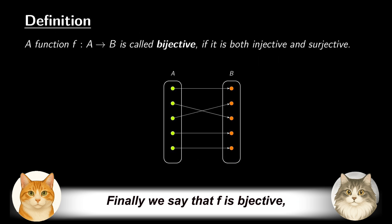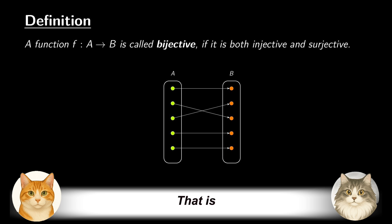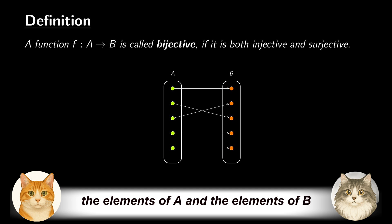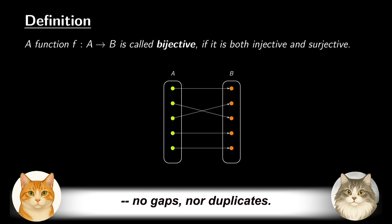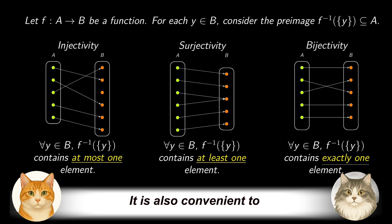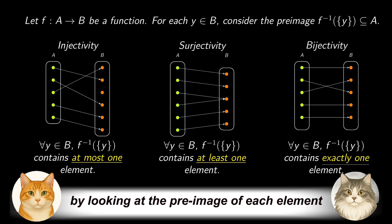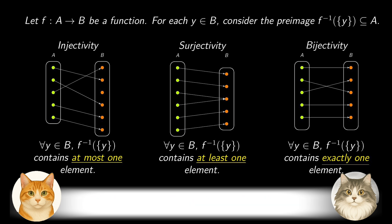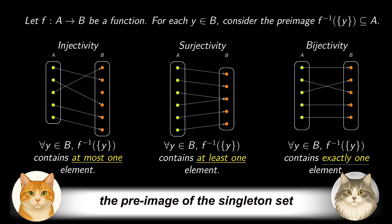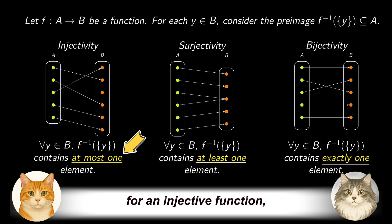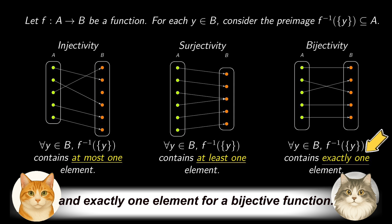Finally, we say that F is bijective if it is both injective and surjective. That is, there's a perfect match between the elements of A and the elements of B — no gaps, nor duplicates. It is also convenient to characterize these properties by looking at the preimage of each element in the codomain. For any element y in B, the preimage of the singleton set should contain at most one element for an injective function, at least one element for a surjective function, and exactly one element for a bijective function.